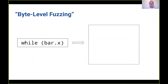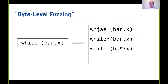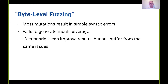When we consider a very simple JavaScript snippet and apply byte-level fuzzing, we have this while bar.x. We might put a 'J' in the middle of the word 'while', add a random star or other random characters — even non-printable characters. We'll normally create invalid tokens or invalid syntax that just gets rejected immediately, and these inputs won't even make it very deep into the parser. When we use byte-level fuzzing for interpreters, most mutations just result in simple syntax errors and this doesn't generate much coverage.